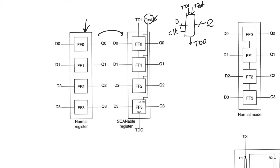The test input to the register is distributed to all flip-flops, so they all share the same test input. If set to test mode, they are all set to test mode simultaneously; if set to normal mode, they are all set to normal mode simultaneously — there is no way, nor any need, to set a specific bit individually. The TDI input of the register is provided to the TDI of the first flip-flop; then the TDO of the first flip-flop feeds the TDI of the next, and so on, until the last flip-flop's TDO becomes the overall TDO of the register.